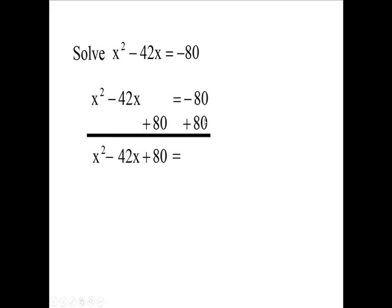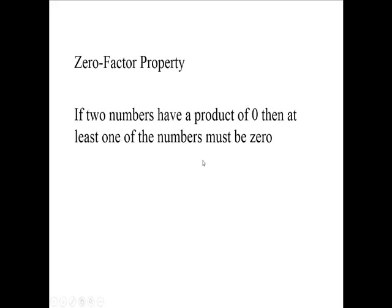Now, since it's zeroed out, 80 minus 80 equals zero. So we have x squared minus 42x plus 80 equals zero. And since it equals zero, we're going to use the zero factor property. It says if two numbers have a product of zero, then at least one of the numbers must be zero.